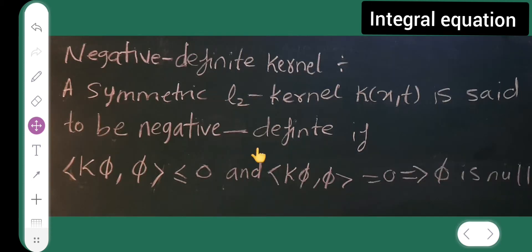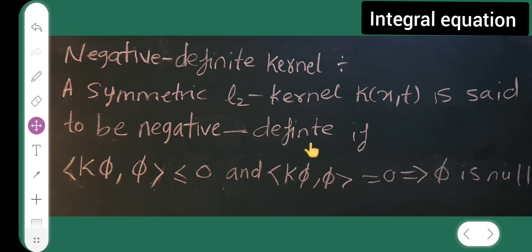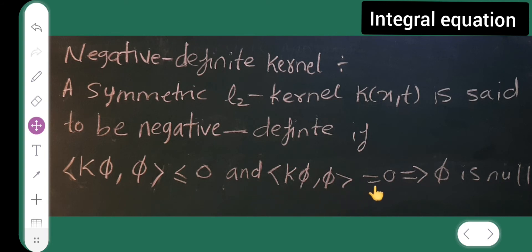Next is negative definite kernel. A symmetric L2 kernel k is said to be negative definite if the inner product k·φ,φ is less than or equal to 0, and the inner product of k·φ,φ equal to 0 implies φ is null.